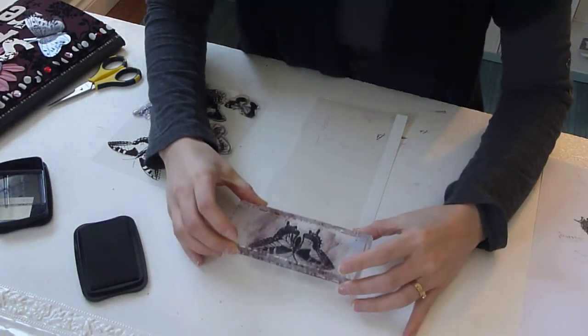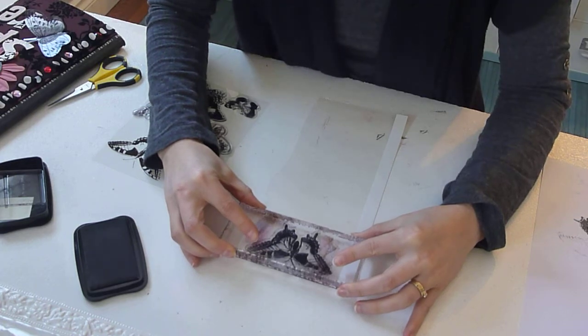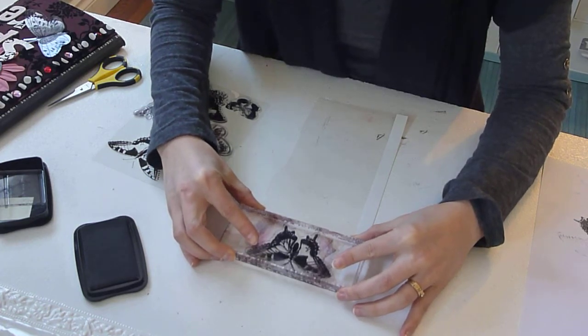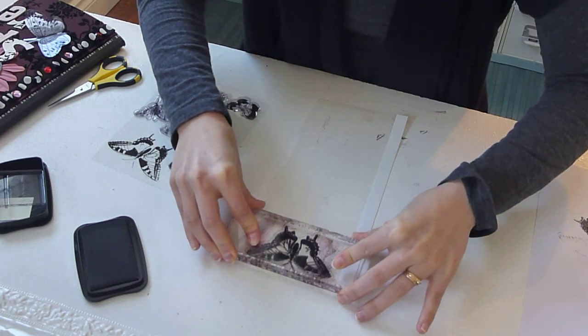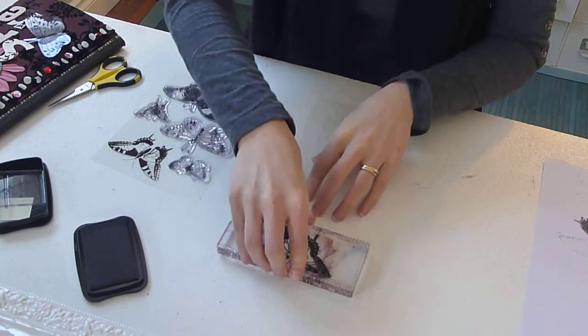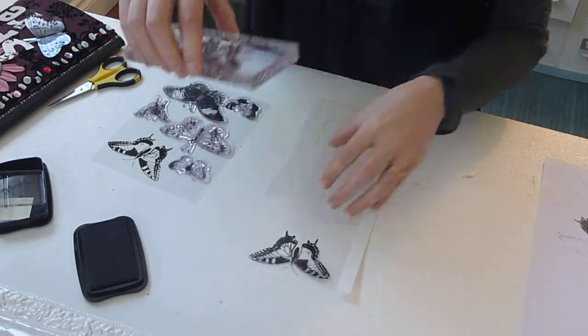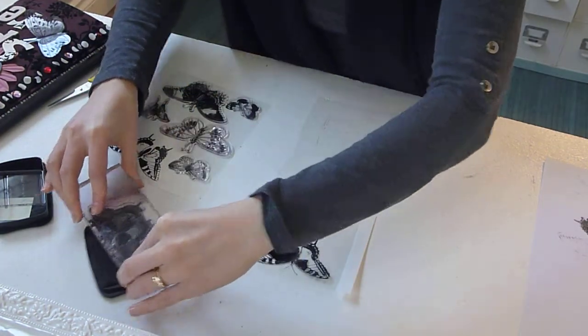And we're just going to stamp two images. Now, you have to have a steady hand while doing this, because it slips on the plastic really easily. And you can totally wreck your image just by the slightest move. So, directly down and directly up.